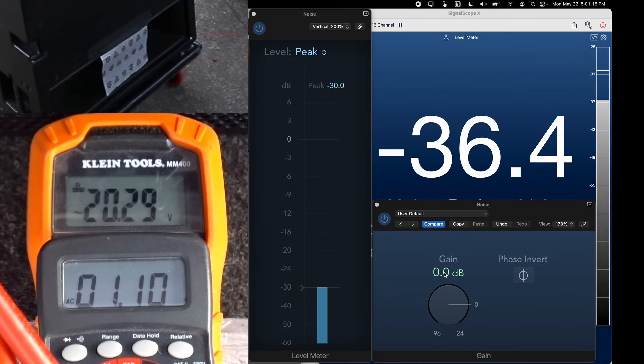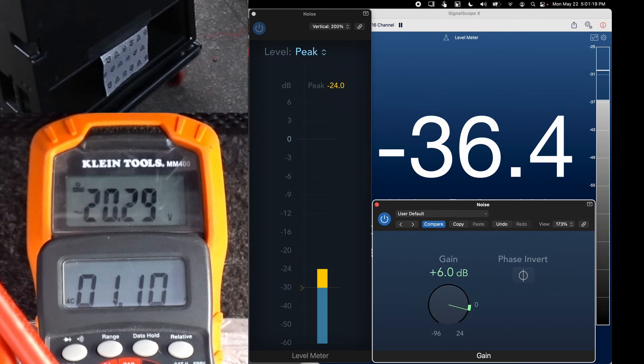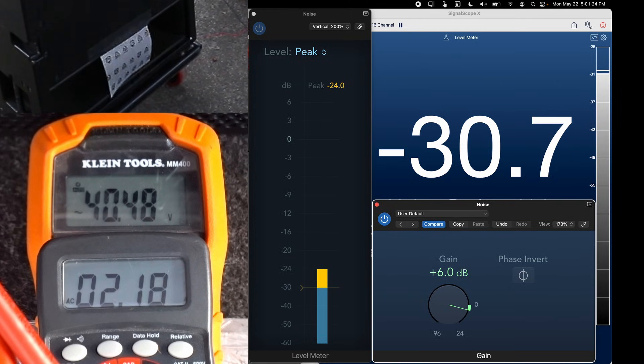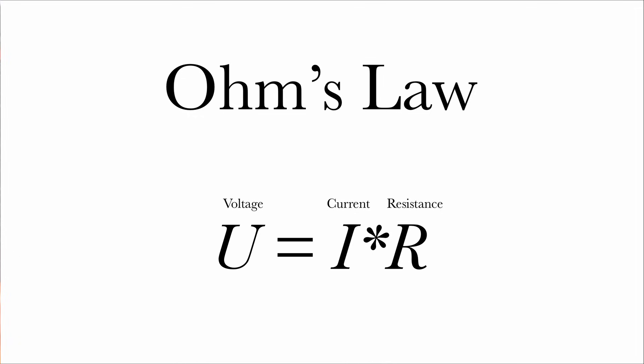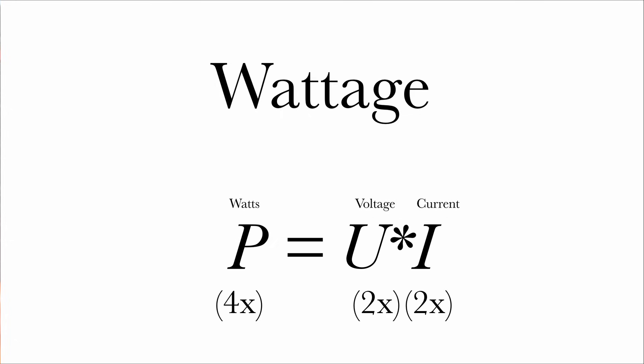Going back to just having one subwoofer plugged in for a moment, if we increase the software output by 6 dB, we can see that we've doubled both the voltage and the current. This is because Ohm's law says that if the resistance stays the same, but the voltage increases, the current also increases. According to the math, we've quadrupled the wattage.